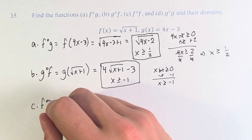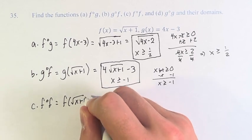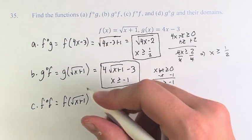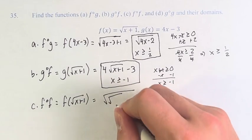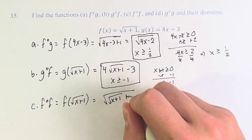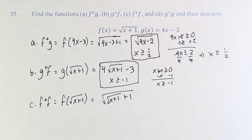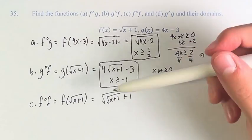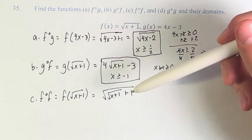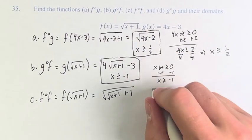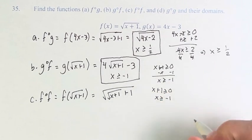Next, we have f of f. This is equal to f of the square root of x plus 1. Therefore, this is the square root of the quantity square root of x plus 1, plus 1. So now we have two square roots to worry about — we have to make sure what's inside the larger square root is non-negative, and the smaller one as well. The smaller one: x plus 1 has to be greater than or equal to 0, therefore x has to be greater than or equal to negative 1.